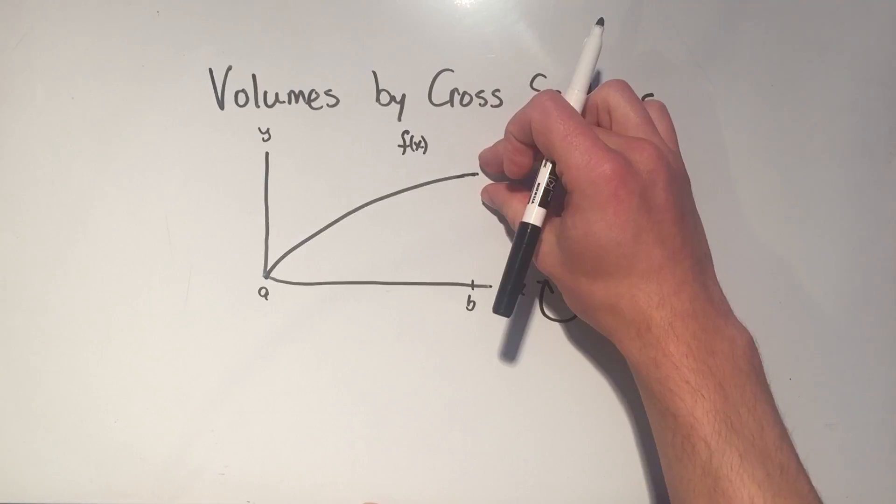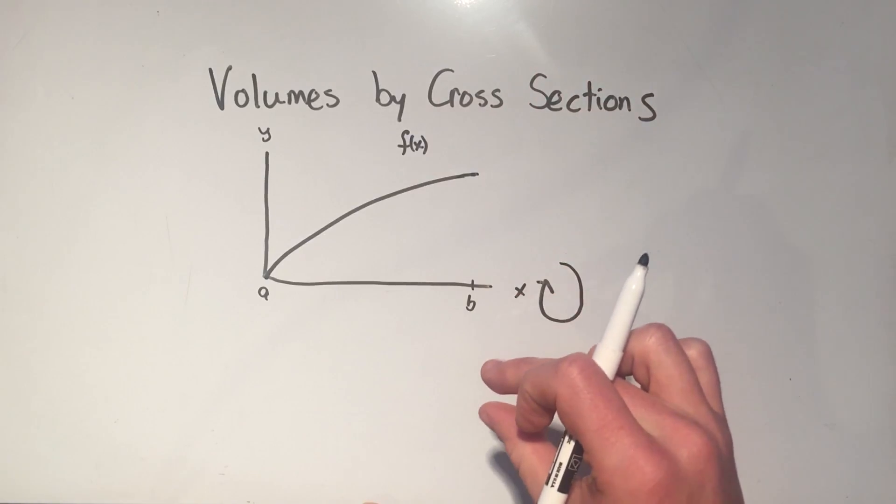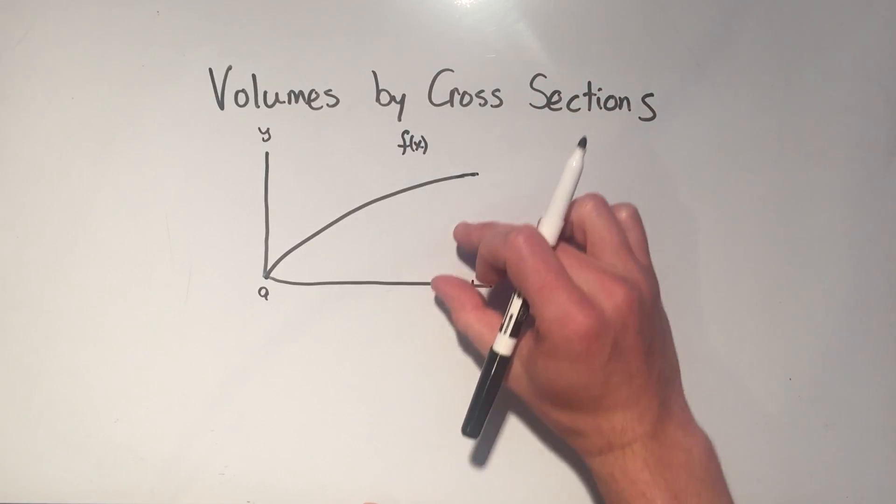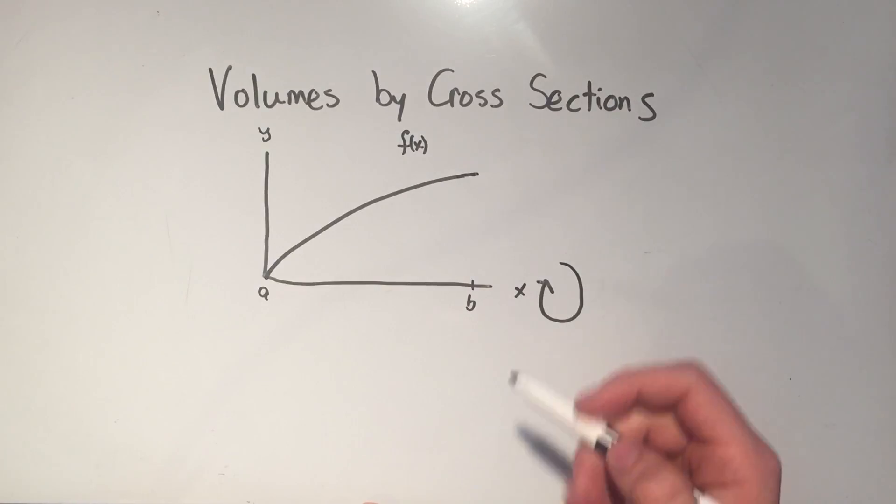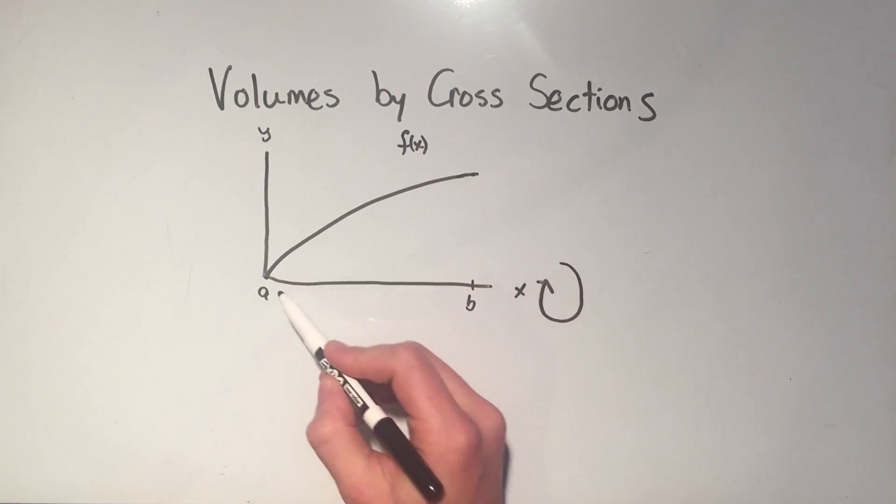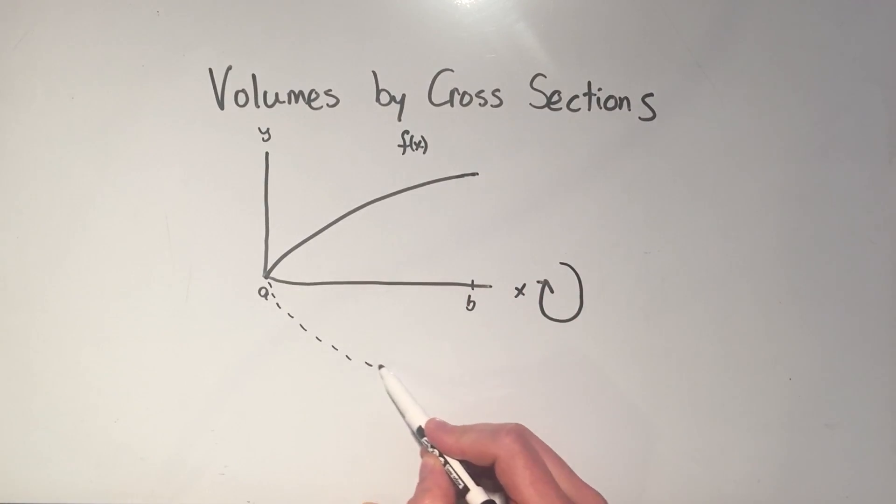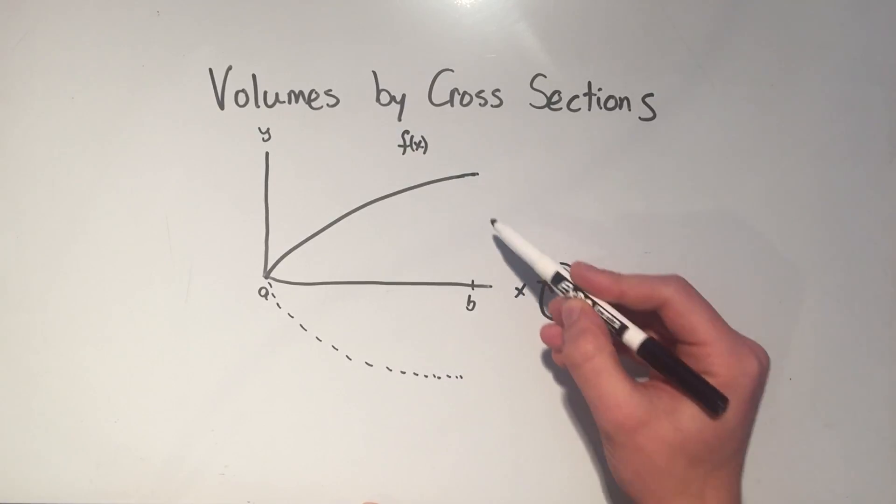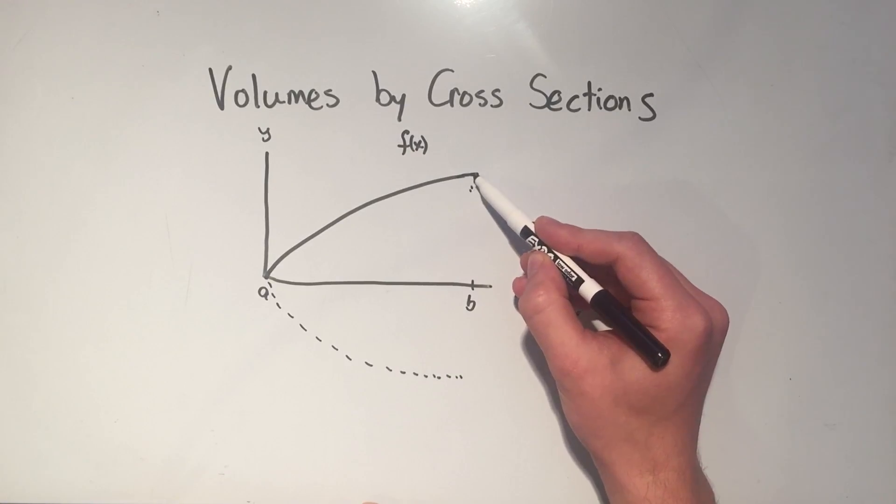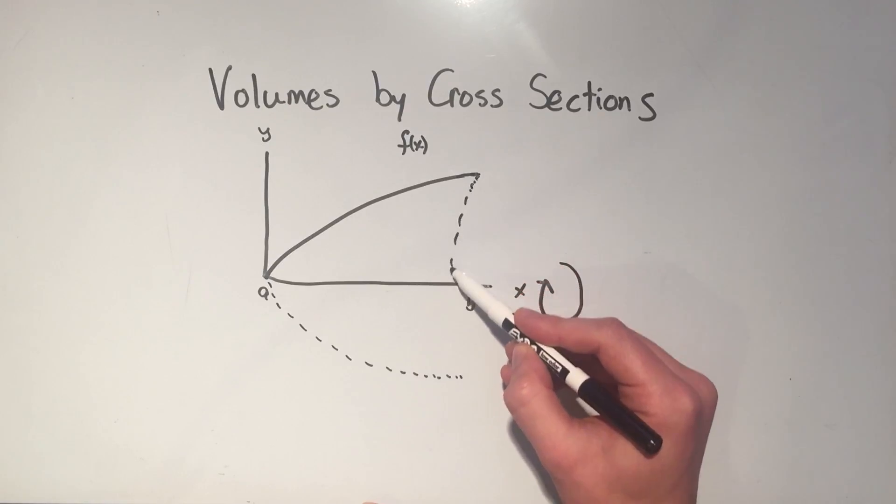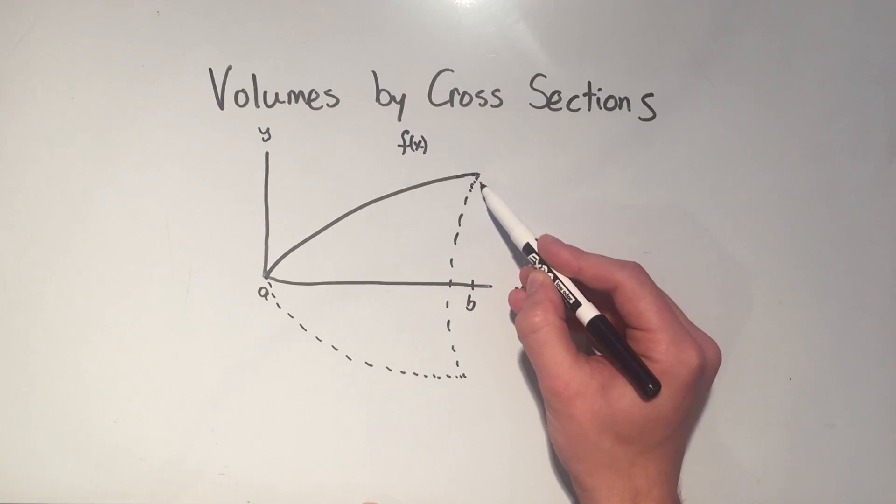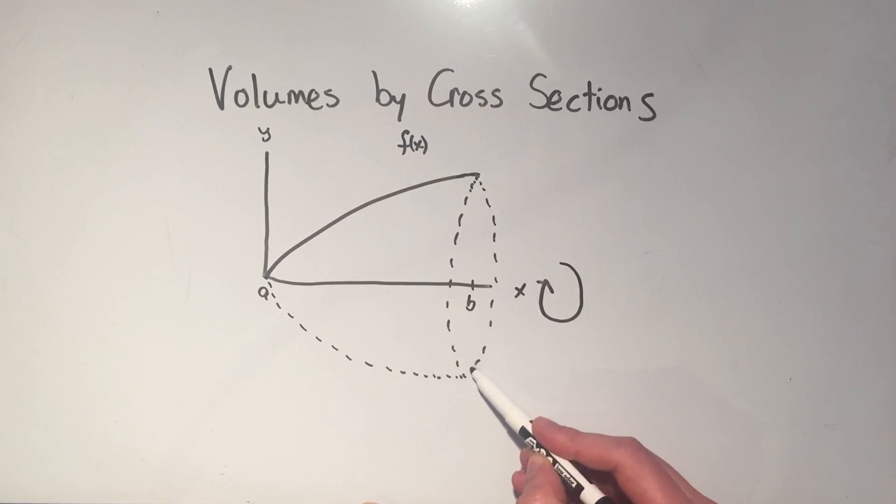So if you can imagine this function coming out of the whiteboard, going around, going through the whiteboard and coming back to where it was, it would make sort of this cone-looking thing. You can imagine it would make this three-dimensional kind of ice cream cone. And I want to know, what's the volume of that thing? What's the volume of that cone that I've created?